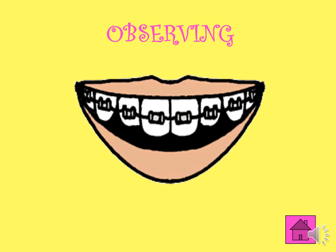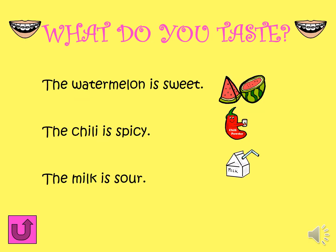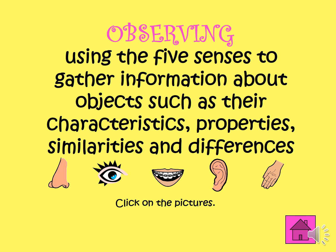Let's move on to our mouths. We use our mouth to taste food or drinks. Here are some examples of observations using our mouth. The watermelon is sweet. The chili is spicy. The milk is sour. There you go. Those are some examples of observations using our sense organs.